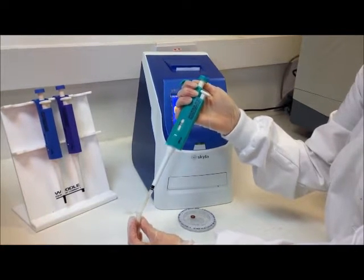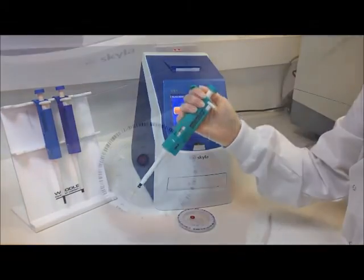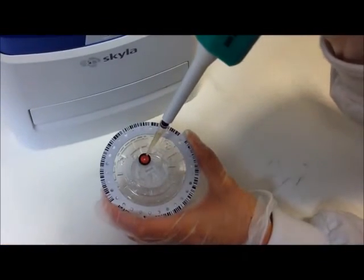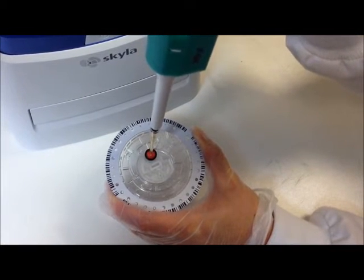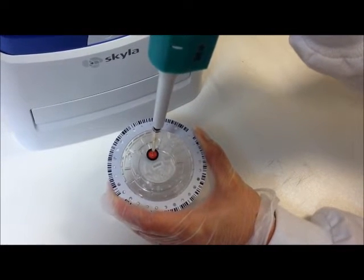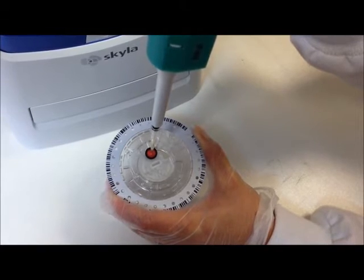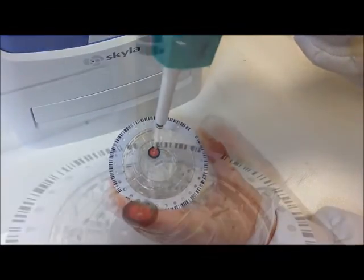With your thumb fully off the plunger, remove the pipette from the sample tube. Insert the pipette tip into the sample port on the rotor. The pipette tip should only make slight contact with the bottom of the sample chamber. Do not push down hard. Keep the rotor level and the pipette tip perpendicular to the surface of the rotor.